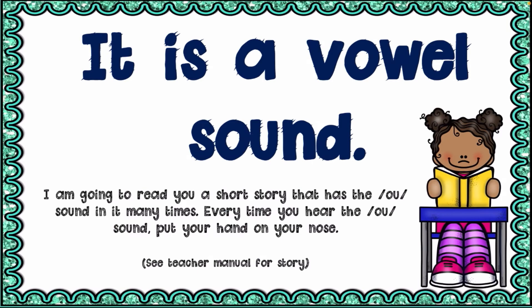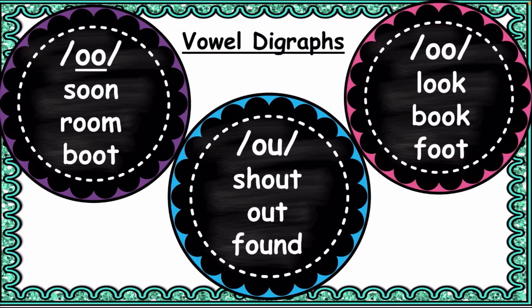I'm going to read a story that has the 'ow' sound. But first, let's look at vowel digraphs. What are vowel digraphs? Vowel digraphs are two vowels placed together to generate one sound — that's what a vowel digraph is. As you can see, we have the long 'oo' sound, the 'ow' sound, and the short 'oo' sound.